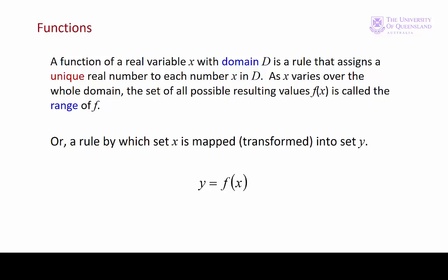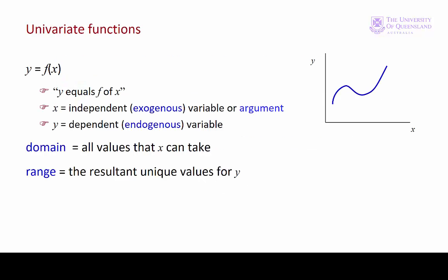Let's look at the notation for a function of one variable. We often write our function in this form and we say that y equals f of x. Sometimes we just have f of x equal to an algebraic expression. In this case, x is the argument of the function. That's the independent or exogenous variable. And y would be the dependent or endogenous variable. Our domain is all the values that x can take and the range is the resulting unique values of y.